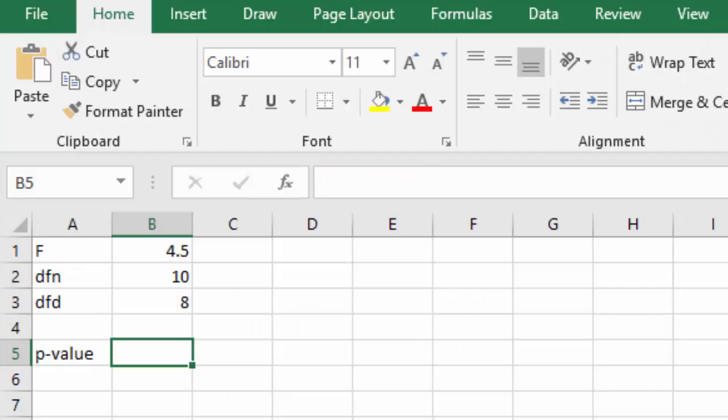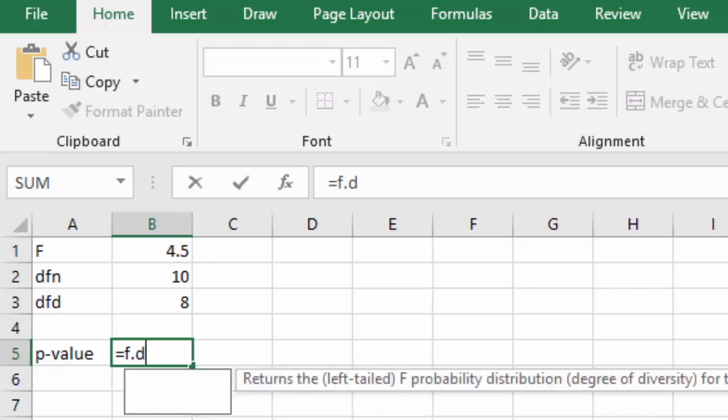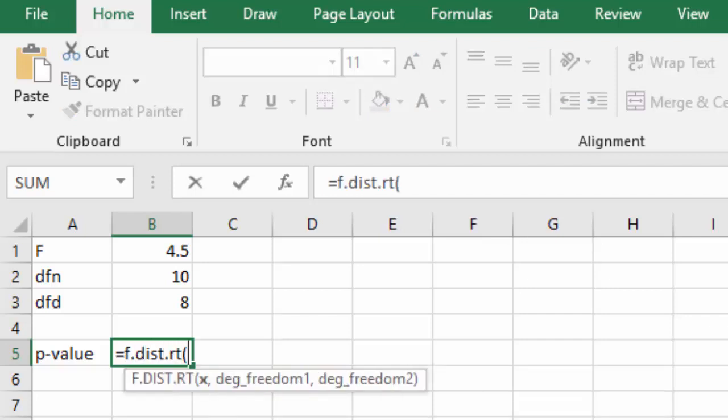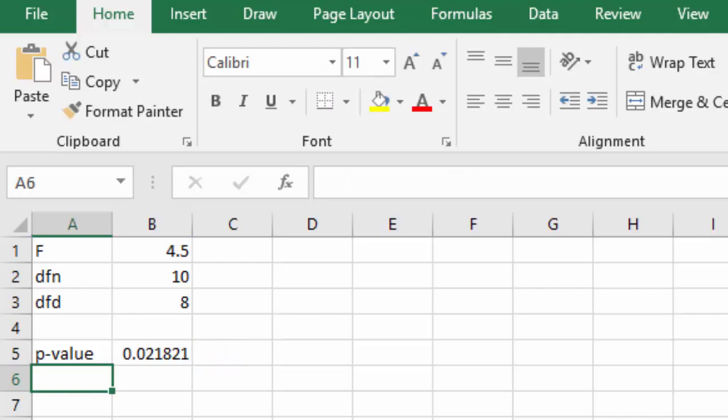Let's go to Excel. Here in Excel, I've copied the data that we just calculated, that F is 4.5, the numerator has 10 degrees of freedom, and the denominator has 8 degrees of freedom. Remember, we're doing a right-tailed test. So to do a right-tailed test, we'll type equals F dot D-I-S-T dot R-T for the right-tail, open up parentheses, 4.5 is my test statistic, the numerator has 10 degrees of freedom, the denominator has 8 degrees of freedom, and we end up with our p-value of 0.022 when we round.